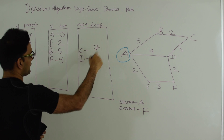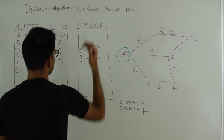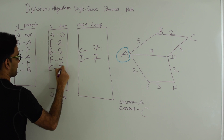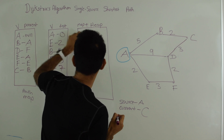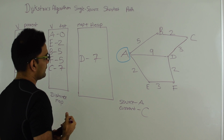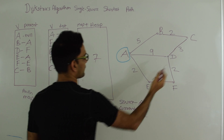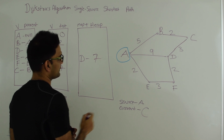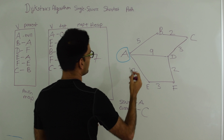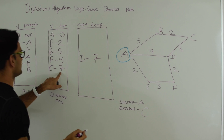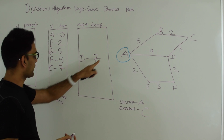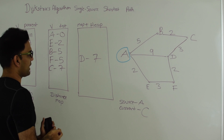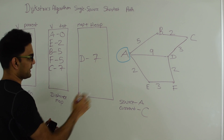We do another extract min and C comes out. Current is C with value 7. We explore C's neighbors. B is not in the heap so we ignore it. D is the other neighbor. The distance to reach D via C would be 7 plus the edge weight of 10, which equals 17 — greater than the current value of 7. So there's no reason to update D via this route, and we ignore it. We're done exploring all neighbors of C.